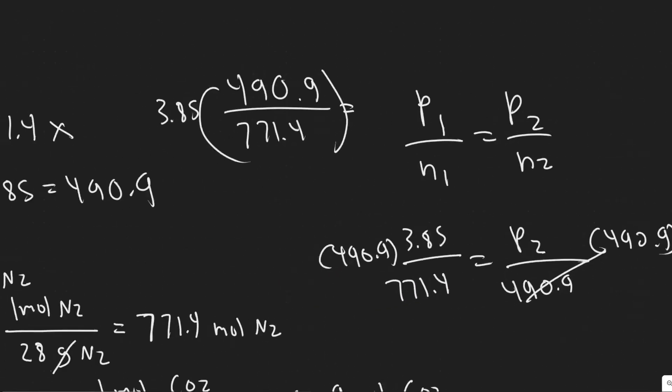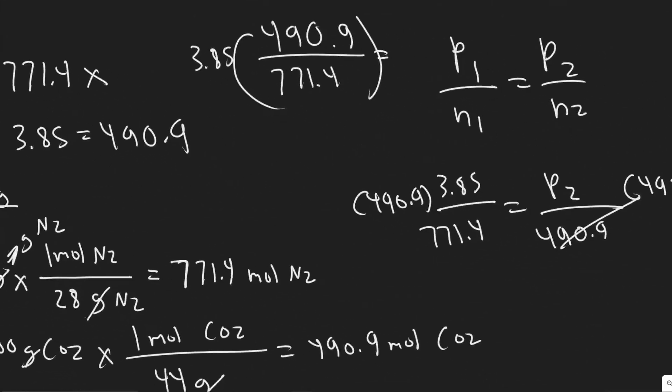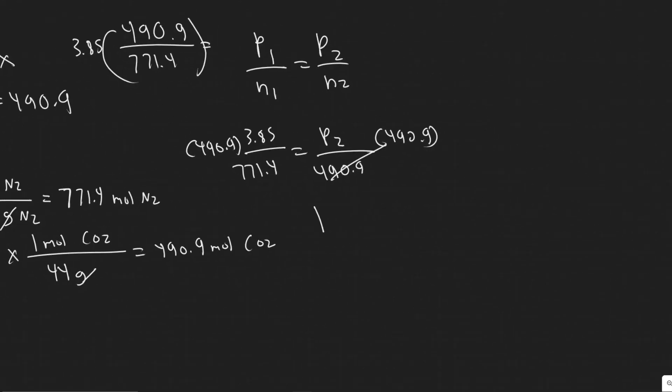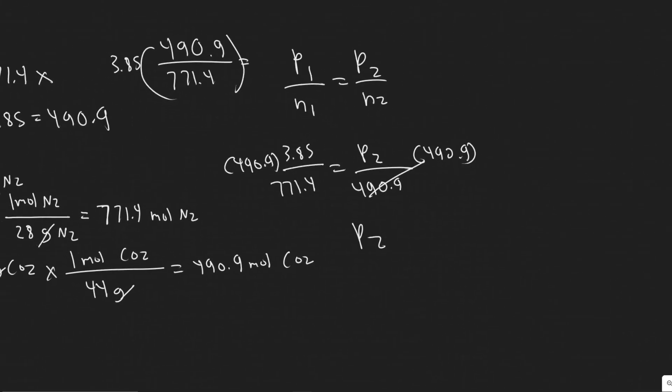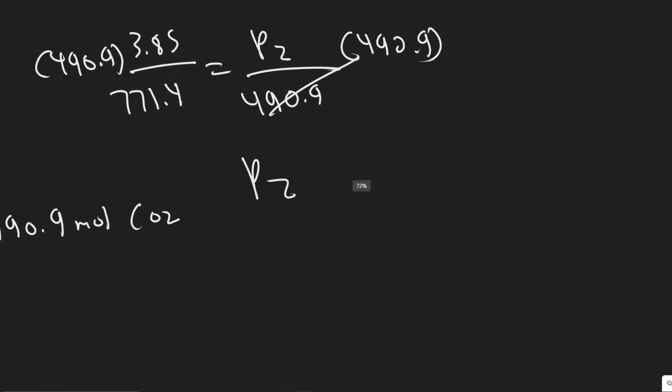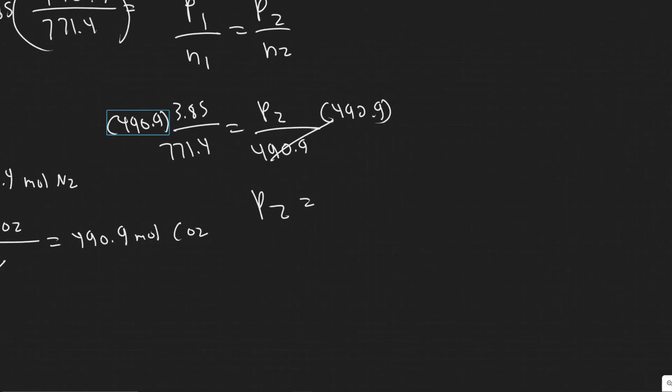And so multiplying both sides by this, you'll see that we have this formula right here. So I just kind of wanted to show you intuitively though, because I think it's important to understand. But yeah, you can also just use this formula assuming those are constant. But yeah, so it just decreases at a constant ratio relative to the number of moles. So yeah, you're just going to do 3.85 times 490.9 divided by 771.4.